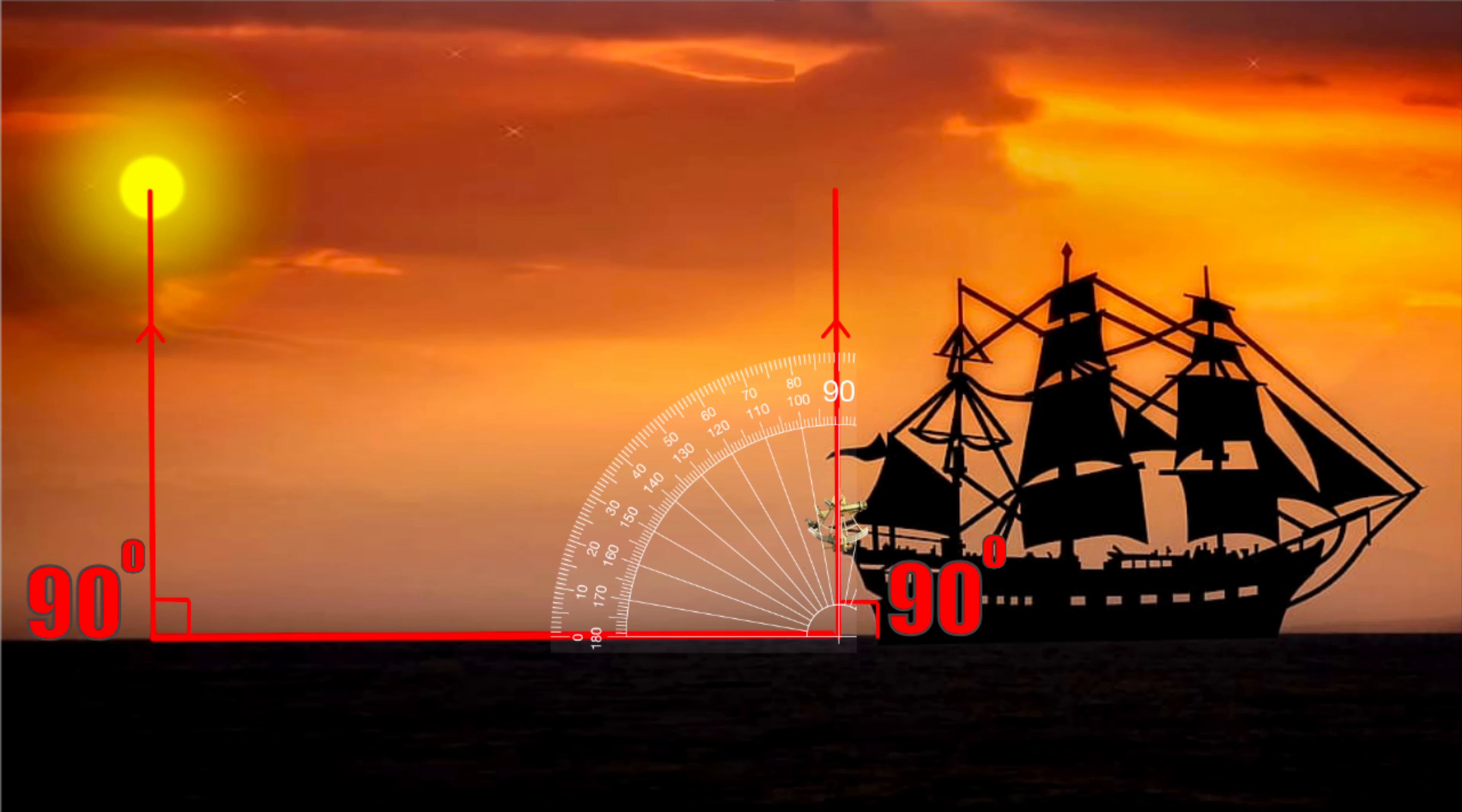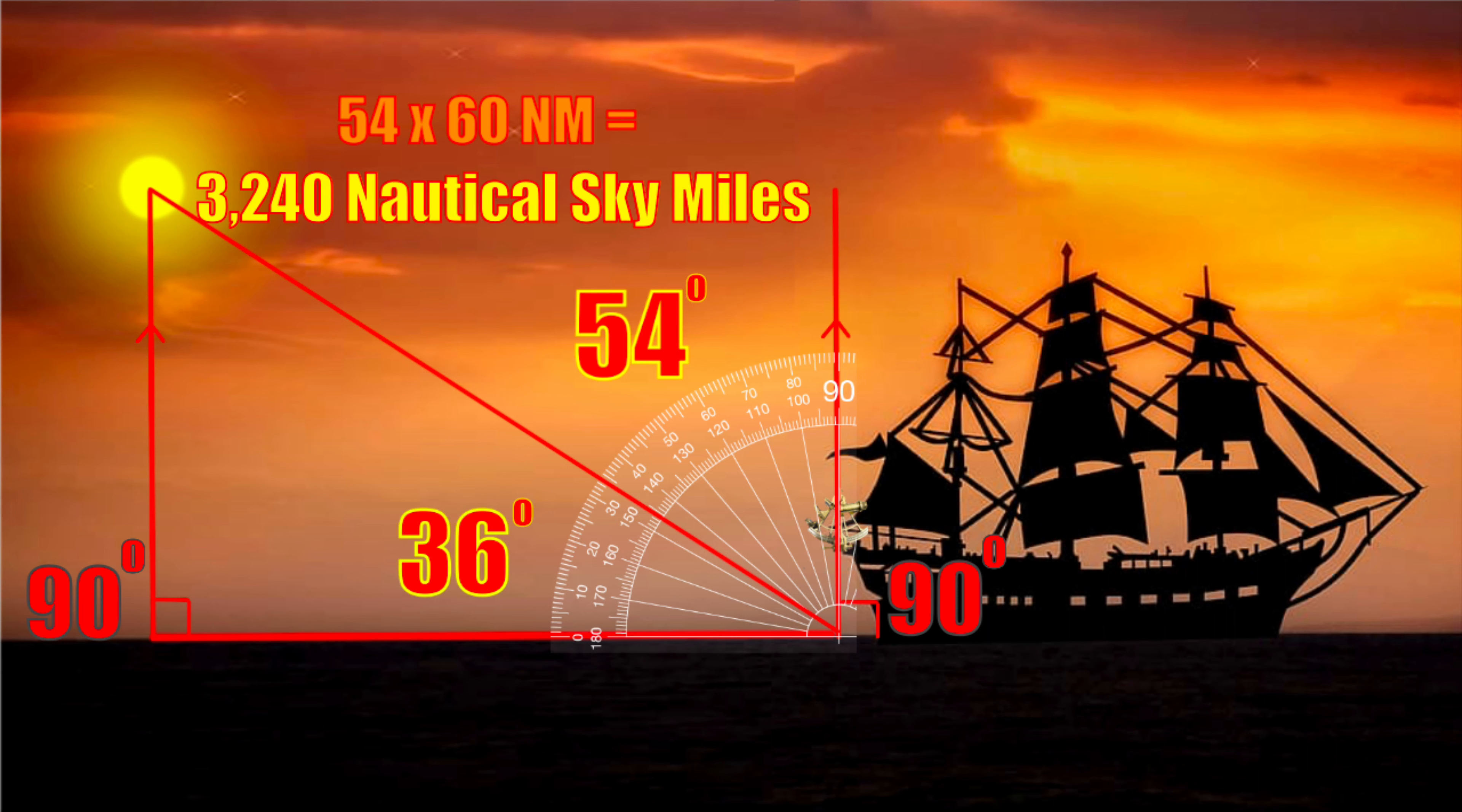For example, an angle that is 36 degrees off the horizon means that there is a deficit of 54 degrees from the 90. So that's 54 degrees of celestial distance from the observer's position, which gives us a straight line sky measurement of 54 degrees by 60 nautical miles, which is 3,240 nautical sky miles.